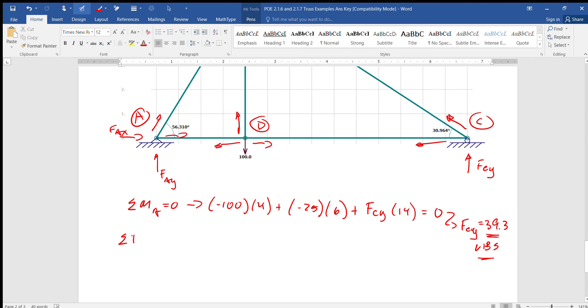Sum of the y's have to equal zero. Nothing's really changed here. Fay minus 100 plus 39.3 pounds, why am I suddenly writing in units when I haven't done it all day, equals zero. Fay equals 60.7 pounds.